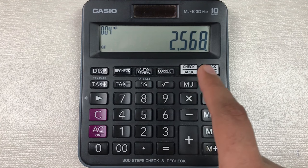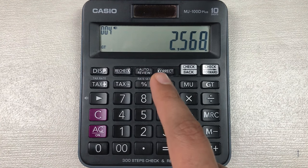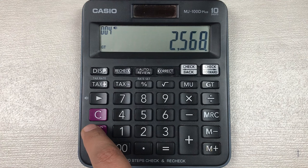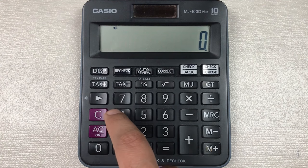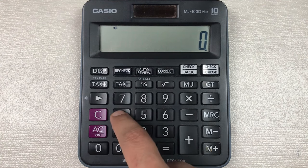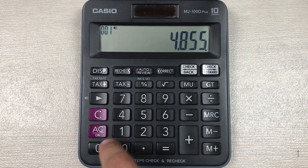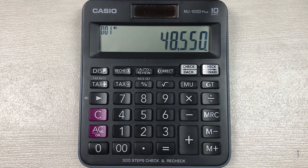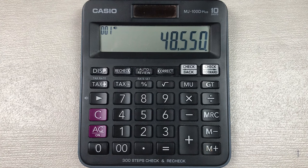Let's move to another example. Let's say we have an item and the price of that item is 48550, and you want to know what will be the final price after 70 percent off. So you multiply it with 70, then you press this percentage button.